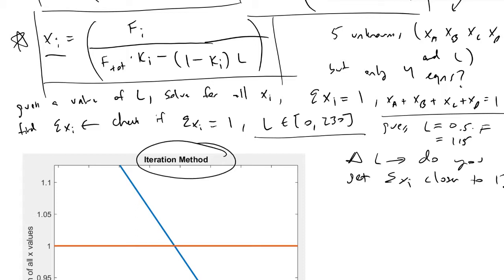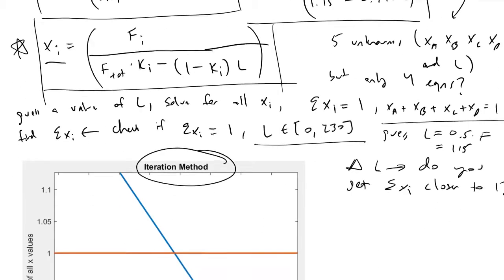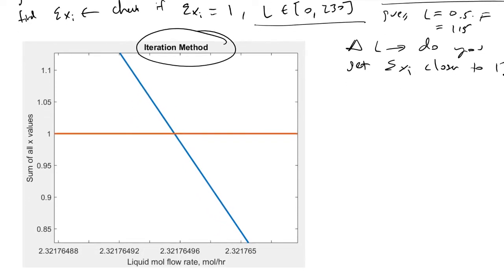I plugged these equations into MATLAB beforehand and had MATLAB plot what values we get for the sum of x_i's. MATLAB found that we reach unity in the sum of our x_i values around 2.32 moles per hour of our liquid flow rate.